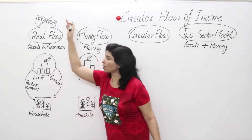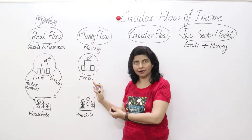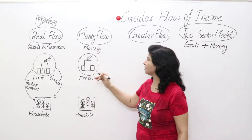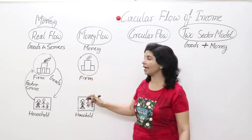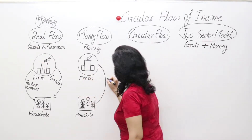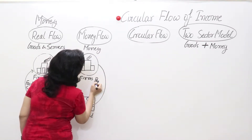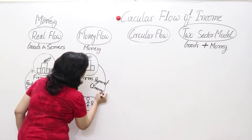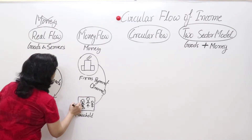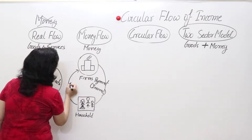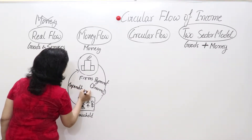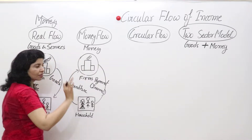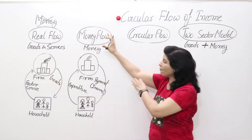In money flow, money is present and you don't exchange goods for goods. Instead, you exchange money for your services. You work for firms and get payment — a salary. From this income, you spend on goods and services produced by firms. This is known as expenditure. So this is the flow of money between households and firms.